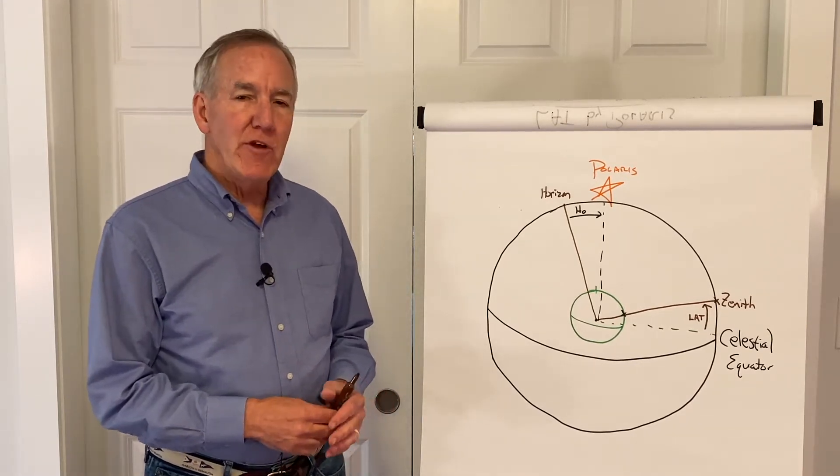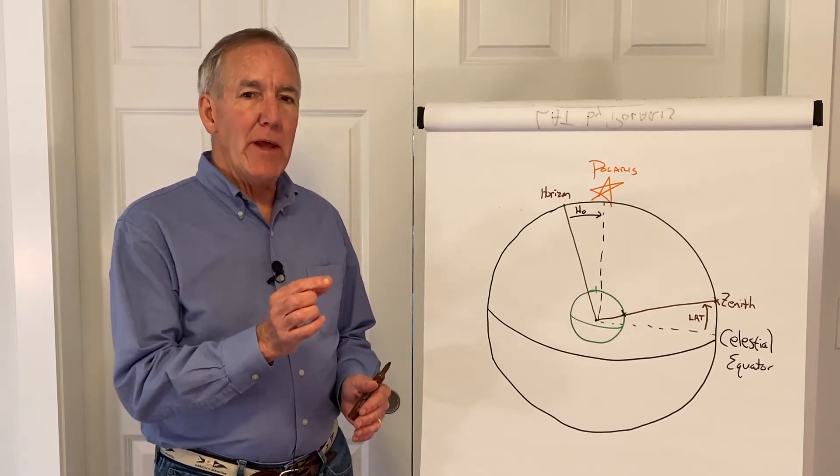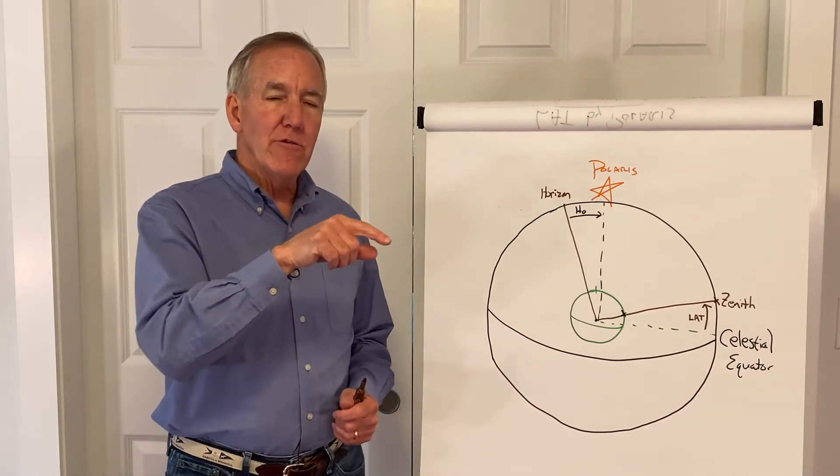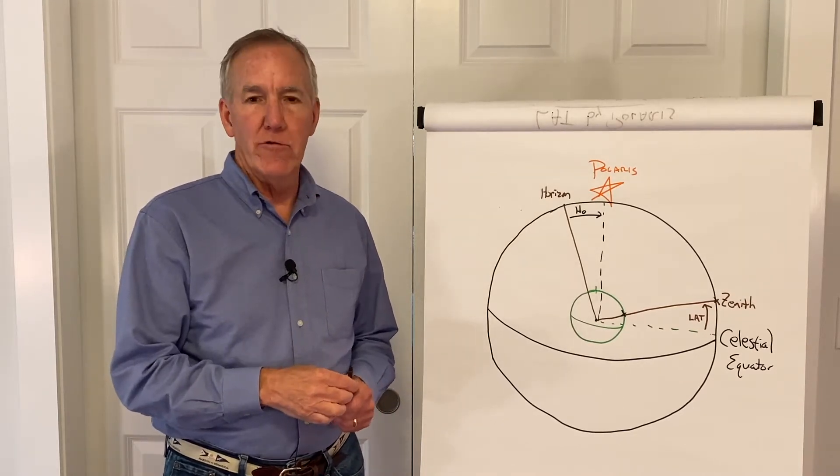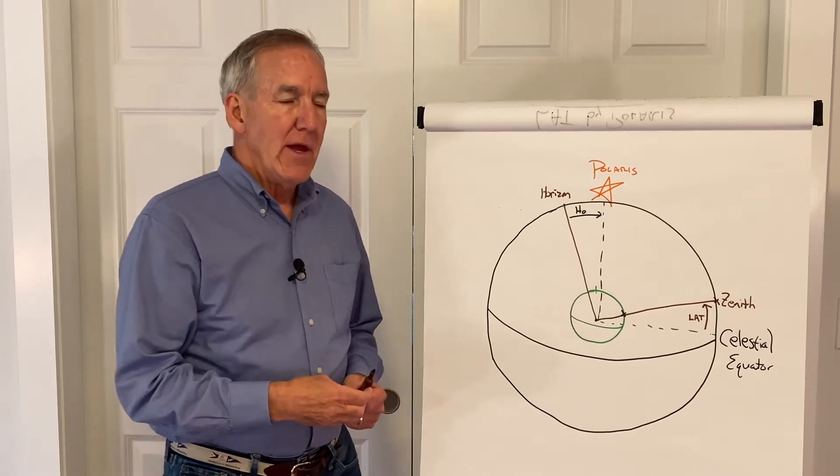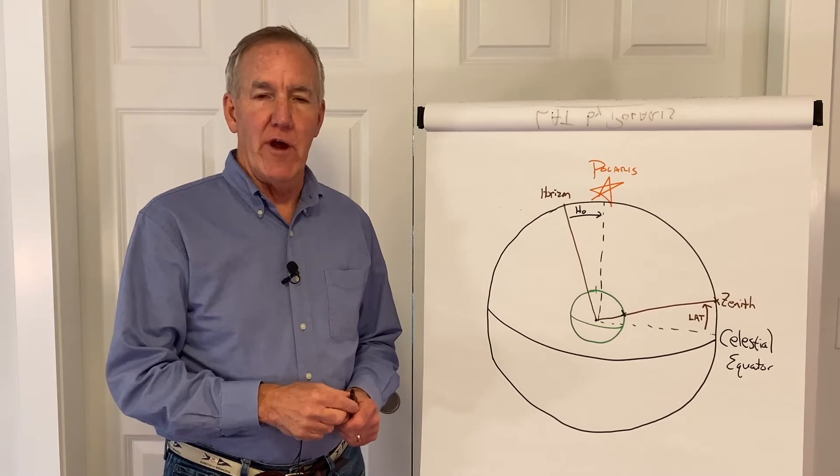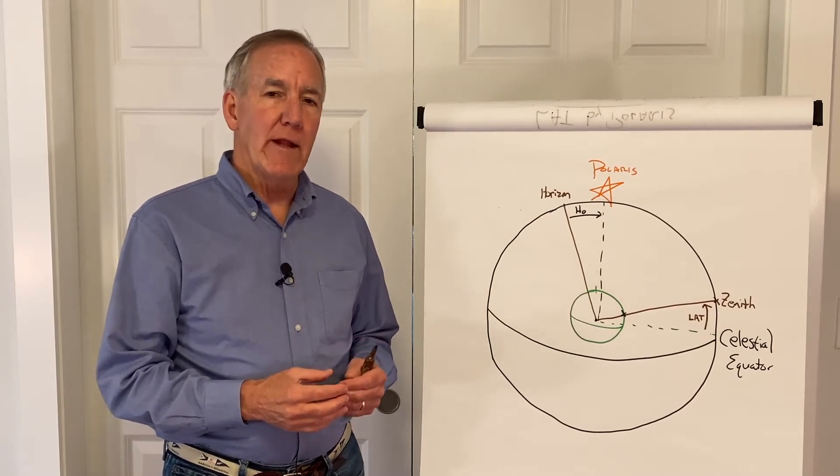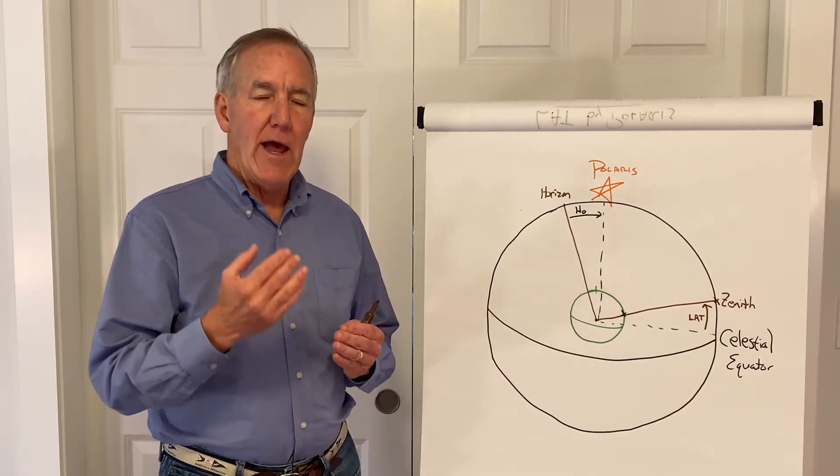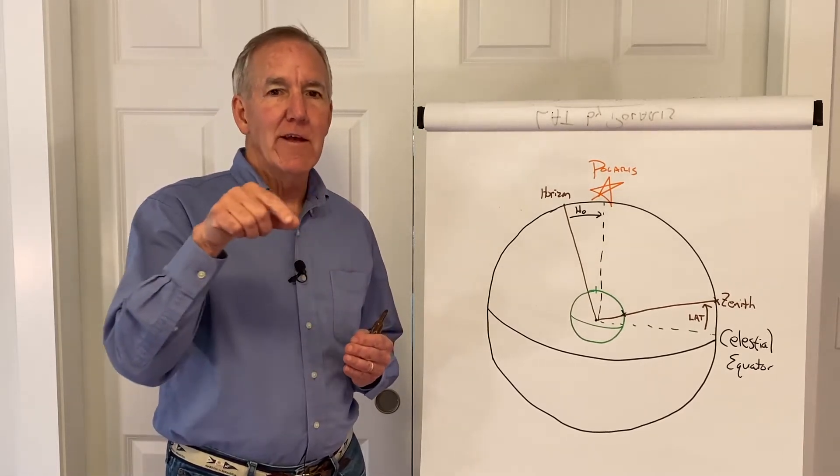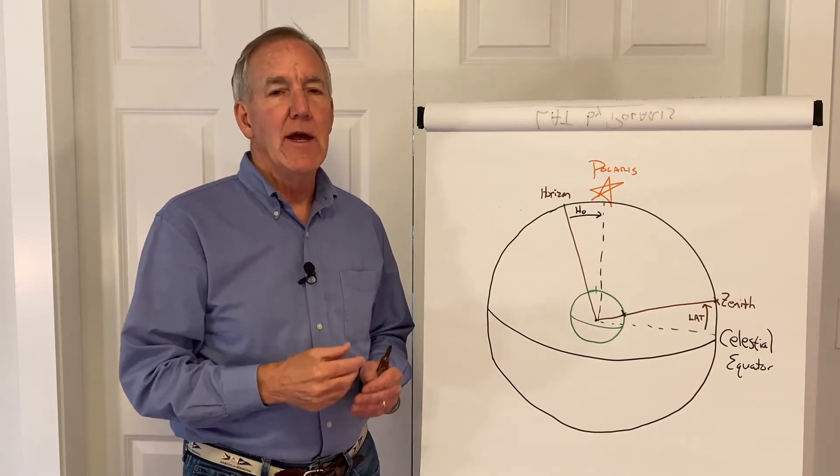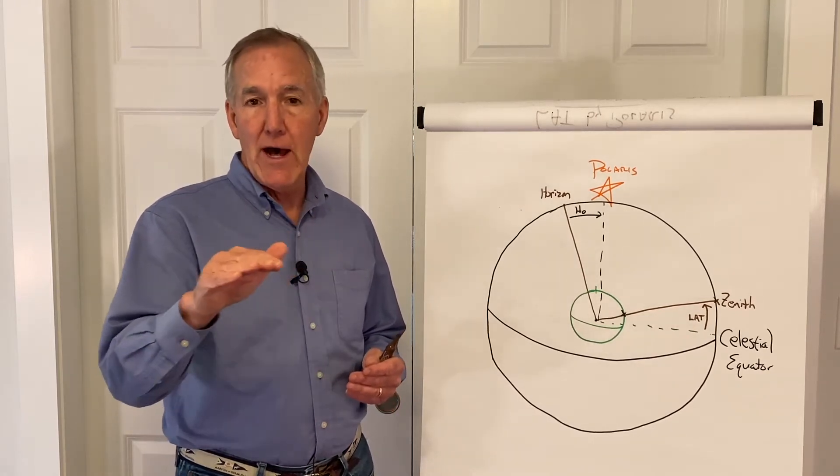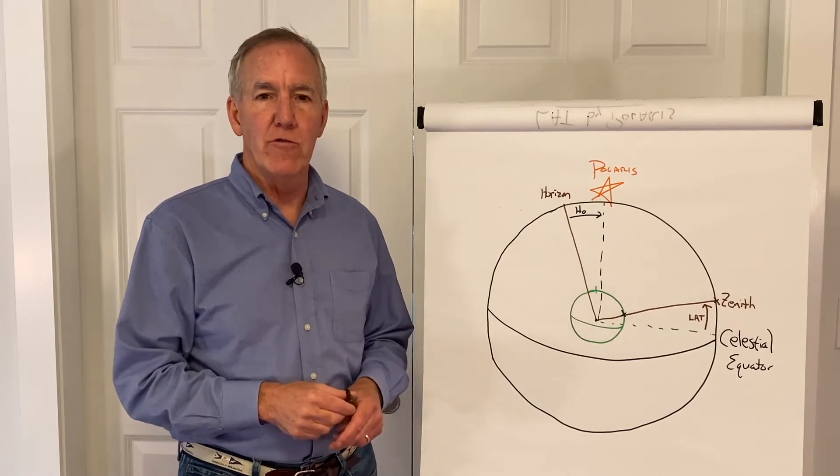Now Polaris sits over the North Pole just a little bit off. It's not exactly over the North Pole. In fact, Polaris describes a little circle around the North Pole, the North Celestial Pole. Polaris can be shot just as a regular star sight, but there are specific tables in the Almanac that allow you to take the sight of Polaris and with corrections for that slight difference in position throughout the year, apply corrections and come up with the latitude, which you can then plot just as a line of latitude just like we do for the noon sight.